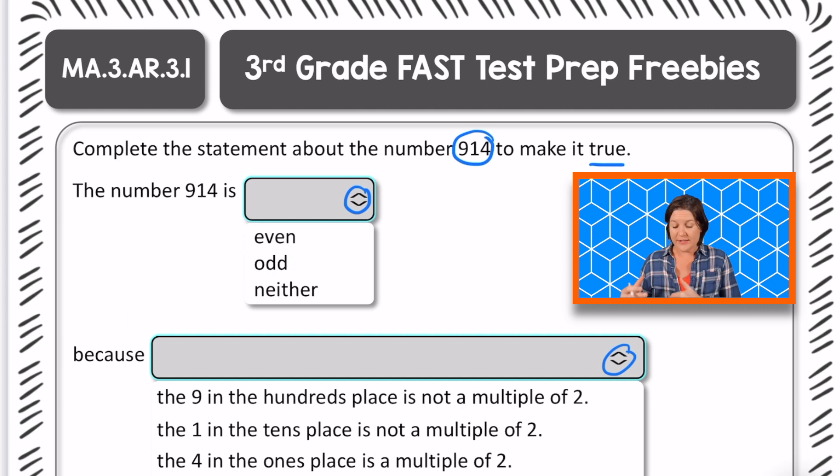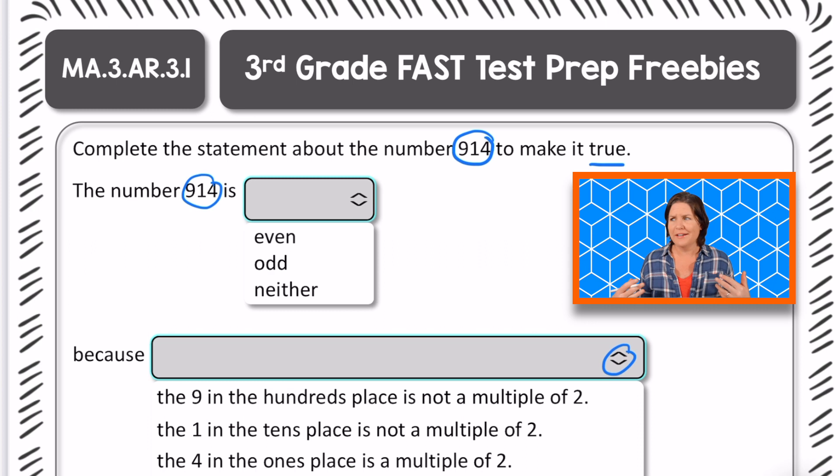So we're going to read the statement and complete it. So it says the number 914, is it even, odd, or neither? I think I'm a neither kind of person. So let's remember that to determine if a number is odd or even, which place do we need to look at?